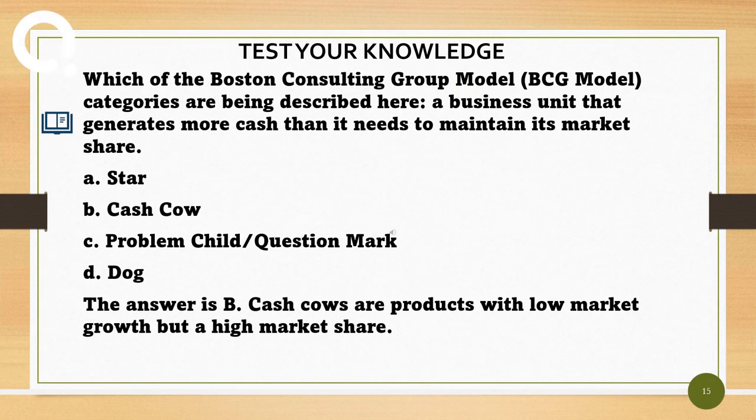Which BCG model category is being described here: a business unit that generates more cash than it needs to maintain its market share? A. Star. B. Cash Cow. C. Problem Child / Question Mark. D. Dog. The answer is B. Cash Cows are products with low market growth but a high market share.